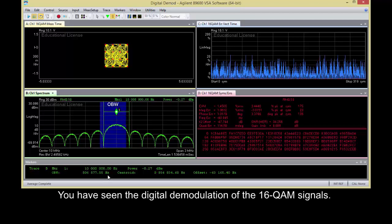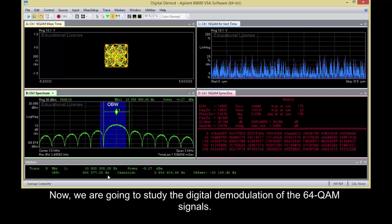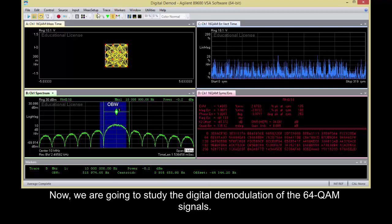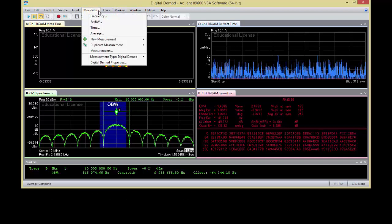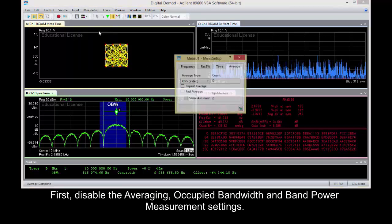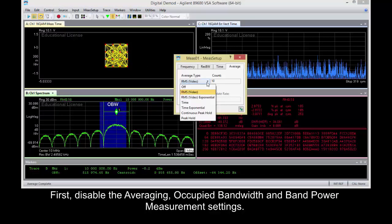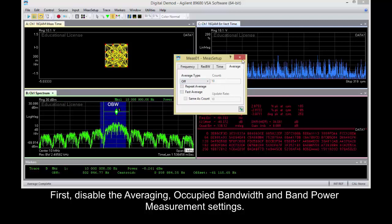You have seen the digital demodulation of the 16QAM signals. Now we are going to study the digital demodulation of the 64QAM signals. First, disable the averaging, occupied bandwidth, and band power measurement settings.